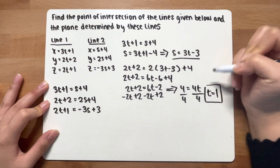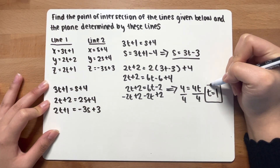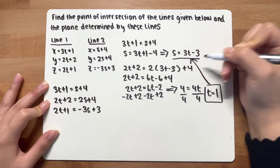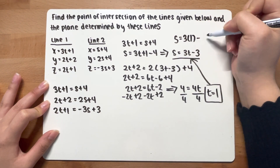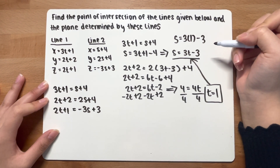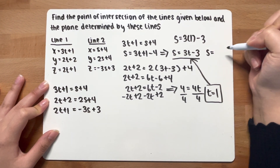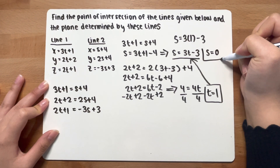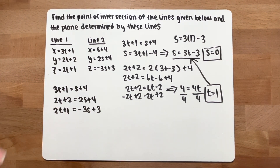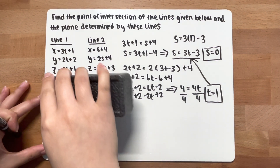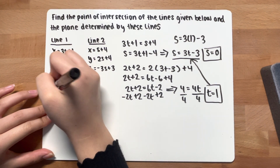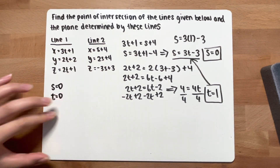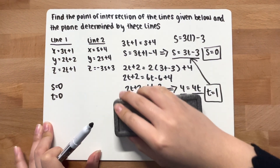Now that you have t, you're going to substitute t back to find s. So you get s = 3(1) - 3, which is 3 - 3, so s = 0. Now that you have your t and s values: s = 0 and t = 1.